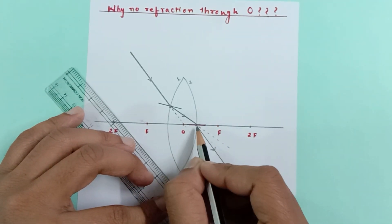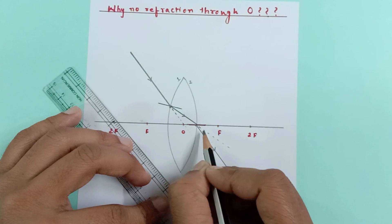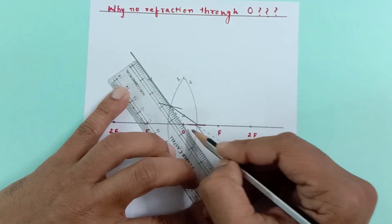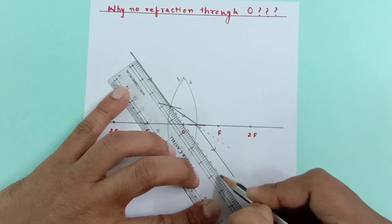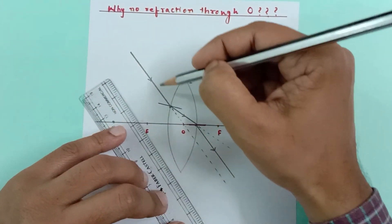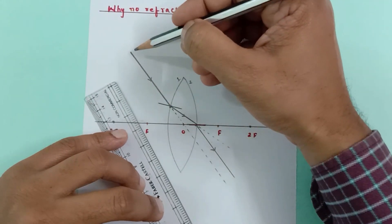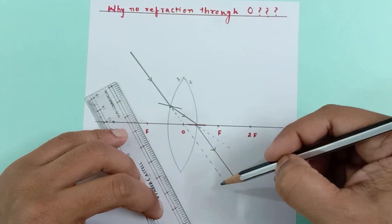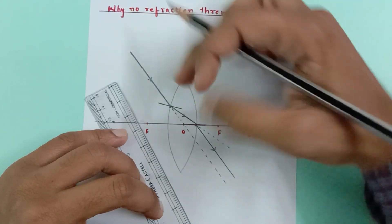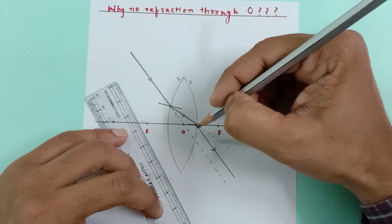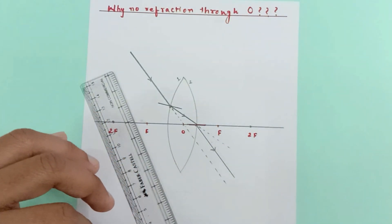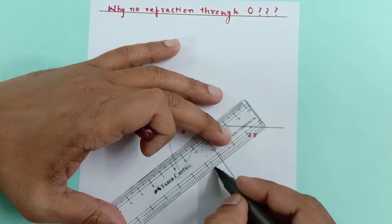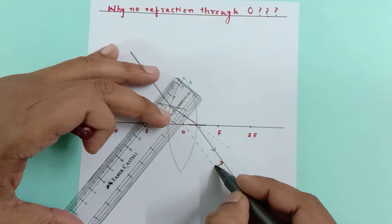The ray is supposed to go straight but it bends away from the normal. If I extend the incident ray — this is the incident ray which wants to go in this direction — but due to the thickness of the lens it is getting refracted and finally coming out. Just like a glass slab, we are seeing a lateral shift here.